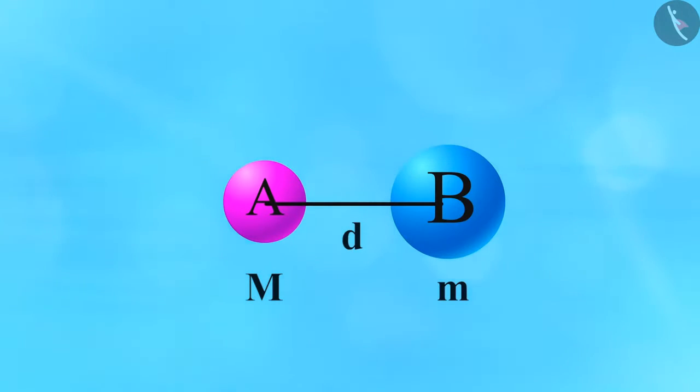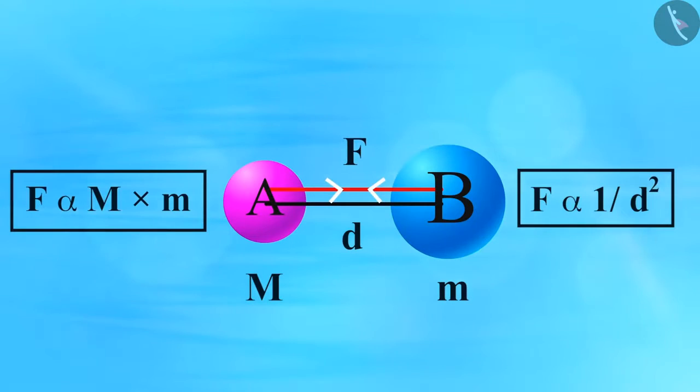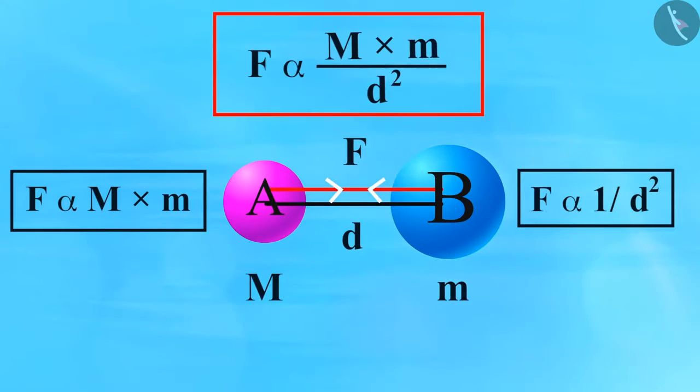Now the force is inversely proportional to the square of the distance between the two objects i.e. F directly proportional to 1 upon d square. Combining these two equations, we get F is directly proportional to M multiplied by m upon d square.